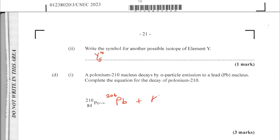Question D1: a polonium-210 nucleus decays by alpha particle emission to a lead nucleus. Complete the decay equation. Since it's alpha emission, a helium nucleus (α particle with 2 protons and 2 neutrons) is removed. This results in the change from polonium to lead, because the alpha particle carries away protons.